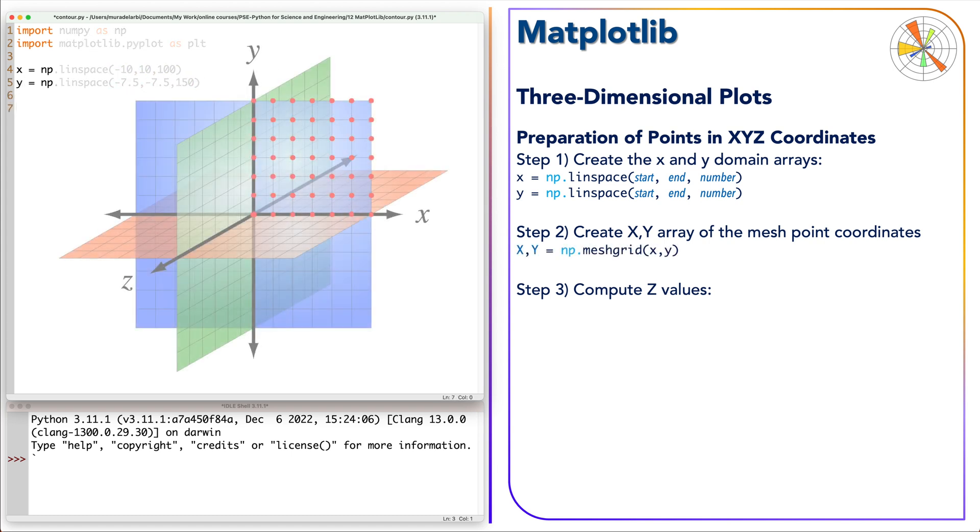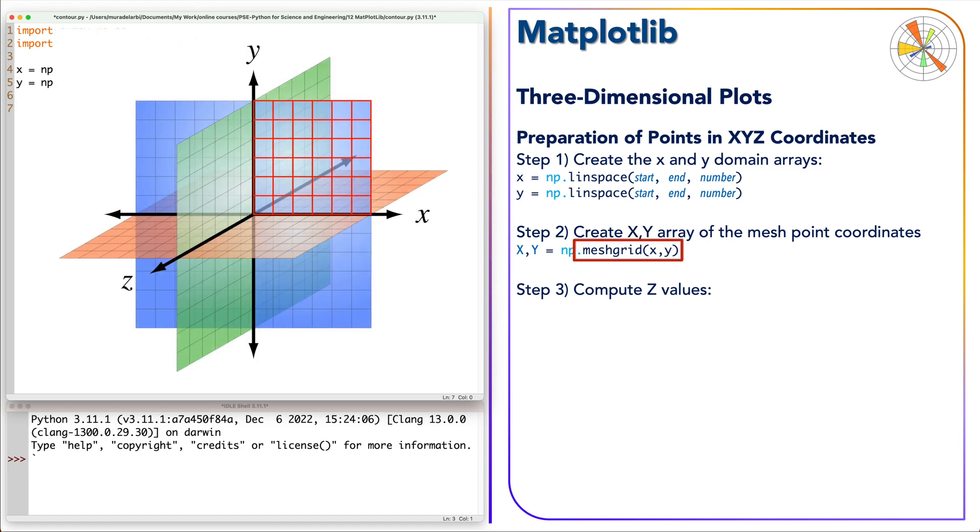In step two, we compute the values of X and Y pairs for each point in the XY plane. For this purpose we use the numpy function meshgrid, which takes the XY values and returns two arrays of the new XY points over the area of the XY plane. I call them X capital and Y capital arrays.